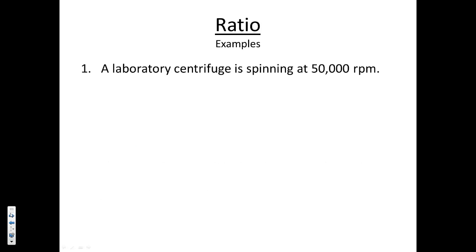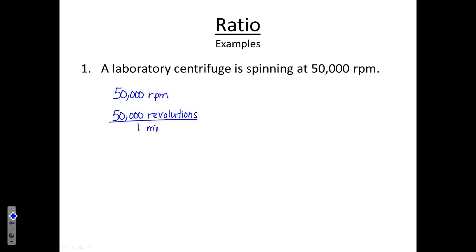Let's look at a couple of examples. A laboratory centrifuge is spinning at 50,000 RPM. What does RPM stand for? Revolutions per minute. So I can take the 50,000 RPM and change that into a fraction: 50,000 revolutions per one minute. You can always add a 1 in the denominator — that doesn't change anything because 50,000 divided by 1 is still 50,000.